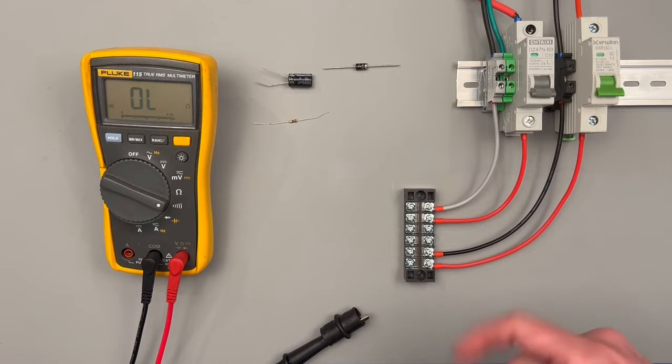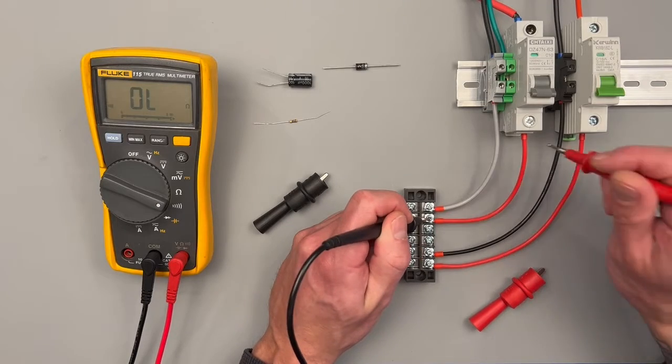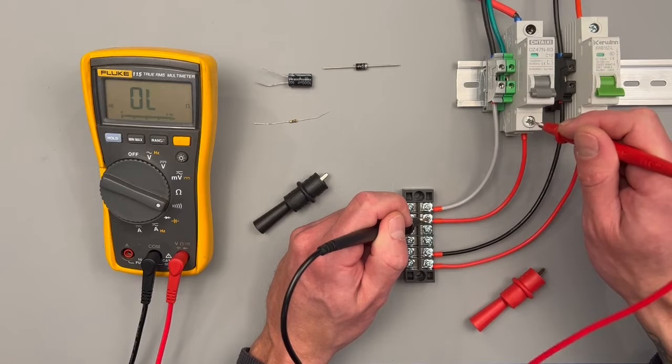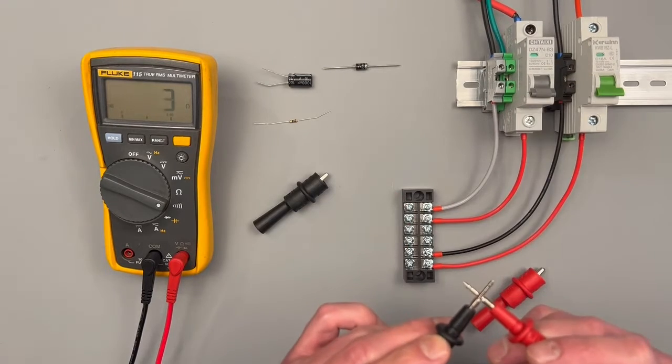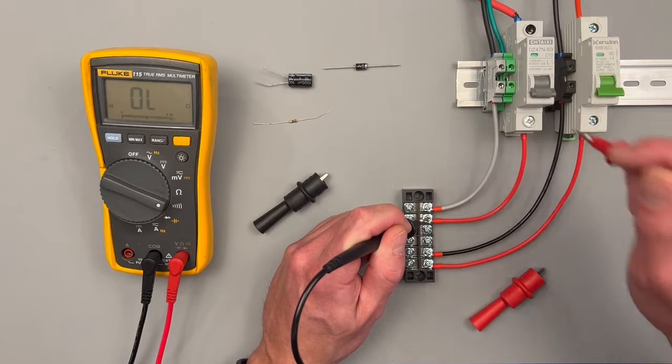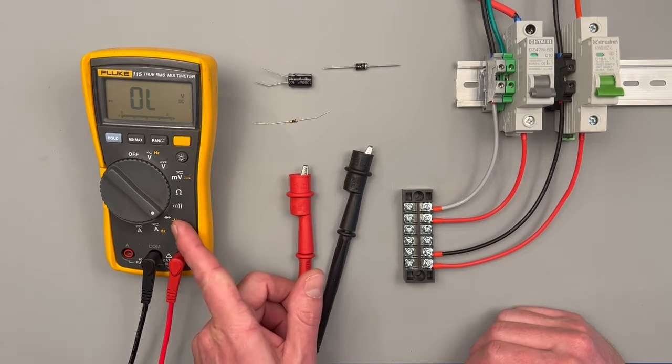Continuity is just demonstrating that we have electron flow from one end to the other. It'll also produce an audible tone so that way we don't have to look at our meter when we're measuring for continuity. Just trying to tell us that there's some kind of flow.